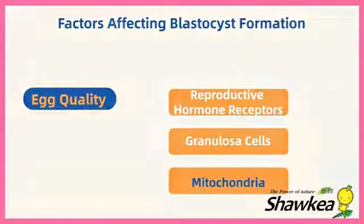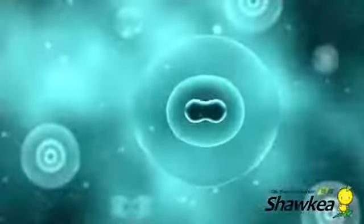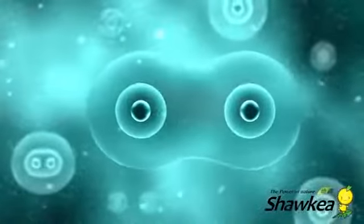Mitochondria are called the energy factories of the egg, and the more mitochondria, the stronger the ability of the embryo to divide.